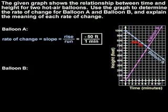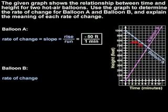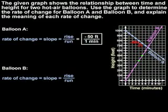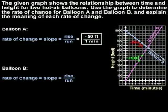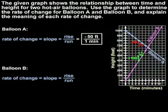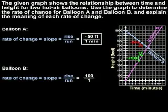To determine the rate of change for balloon B, since rate of change means slope, or rise over run, we choose two points on the line for balloon B. To get from one point to the next, we rise 100 units and run one unit. So the rate of change, or slope, or rise over run, is 100 over 1.